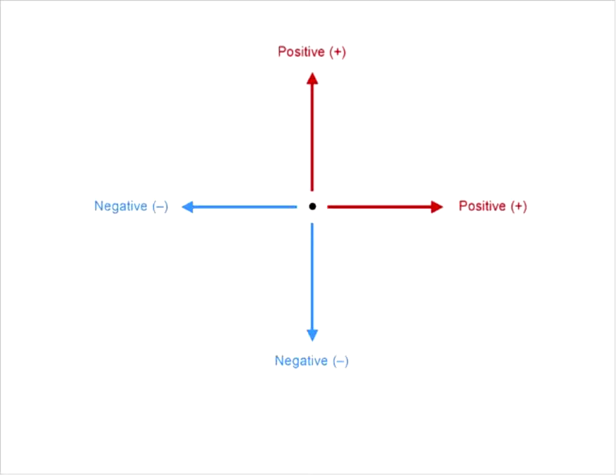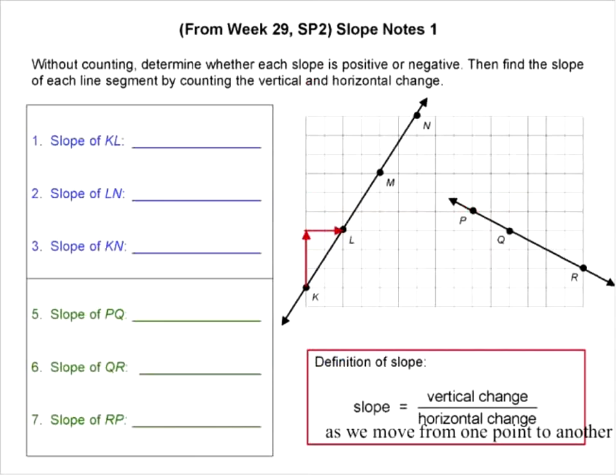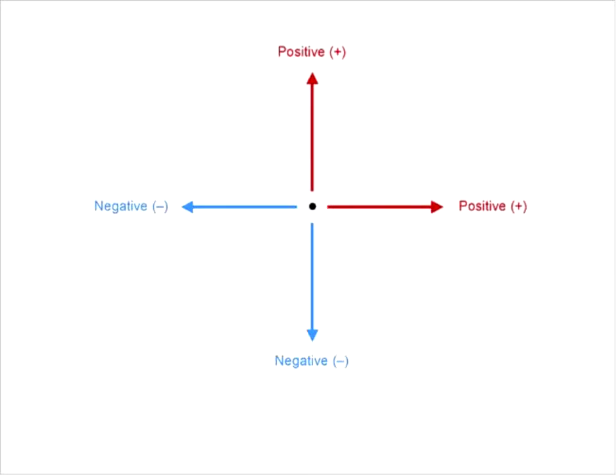One thing that might be helpful, it might be a good idea to draw a diagram like this one to help students remember that if we're going up, then the change is going to be positive. If we're going down, then the change is negative. If we're moving to the right, positive, and if we're moving to the left, the change is negative. And by the way, there's something similar to this, although it's not in color, but it is in your teacher guide.